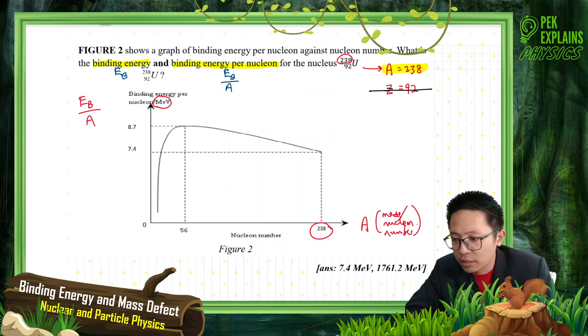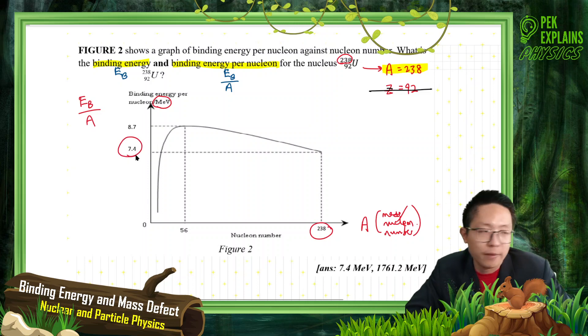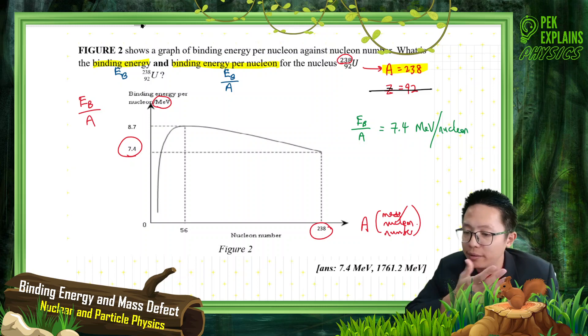So this 238, so the value I need is binding energy per nucleon, this one. 7.4. So actually I get the binding energy per nucleon first. So the answer is my binding energy per nucleon for this uranium is 7.4 MeV per nucleon. Now I already got answer.